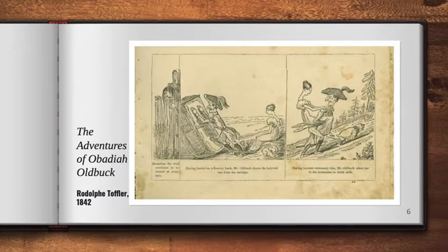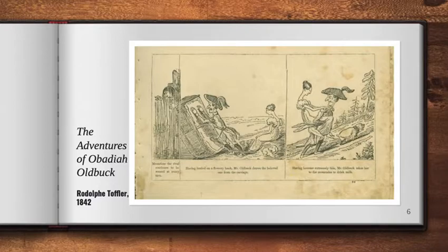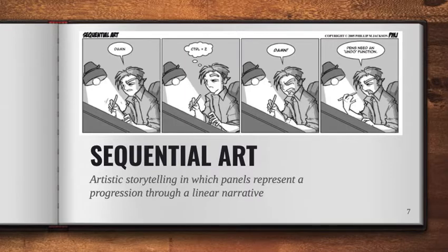Here we see a couple of panels from The Adventures of Obadiah Oldbuck. It was a serial in a weekly humor magazine called Brother Jonathan, and it told stories about the adventures of a young man and his lady love using captioned cartoons in a strip-like fashion. That brings us to our first important vocabulary word: sequential art. Sequential art refers to visual storytelling in which the panels represent a progression through a linear narrative.